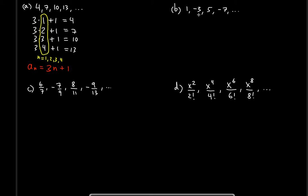In the next example, we have not only a constant difference as with positive numbers, but we also have negative numbers. The signs change — positive, negative, positive, negative. The sign alternates every time, and we're talking about negative one raised to a certain power.